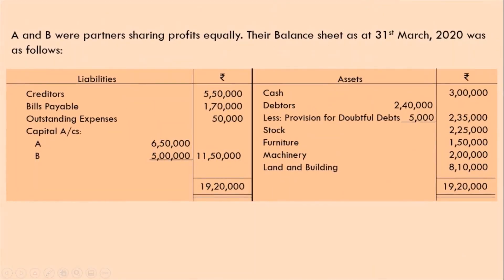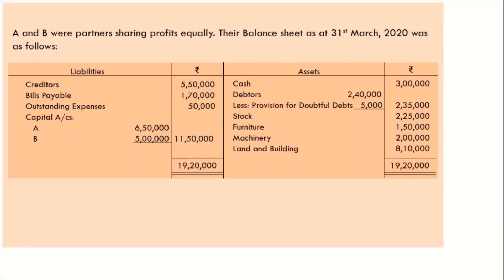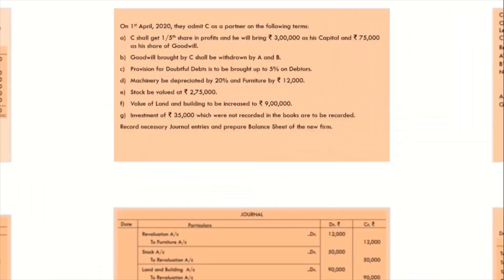First we will read the question and try to solve it. A and B were partners sharing profit equally. So old profit sharing ratio — mark here — given equally. Their balance sheet as at 31st March 2020 was as follows: creditors, bills payable, outstanding expense, capital of A and B on the liability side; cash, debtors, stock, furniture, machinery, land and building on the asset side. All these are general items and we are all familiar with this.